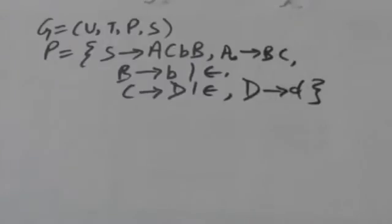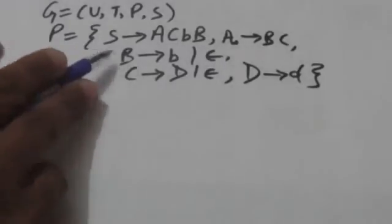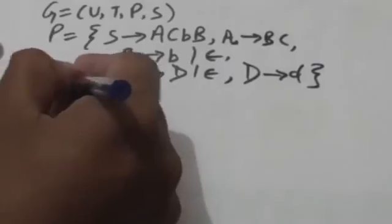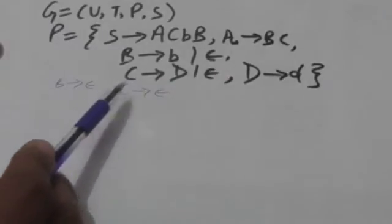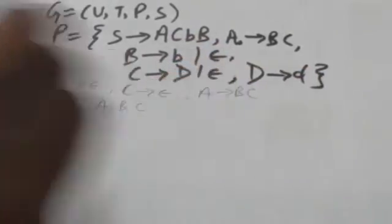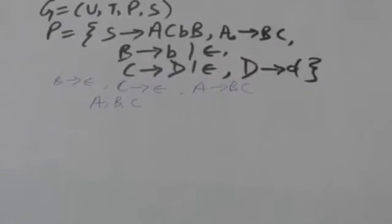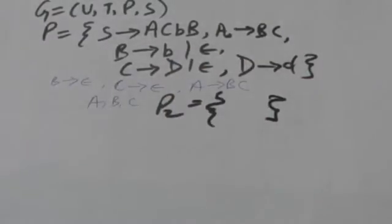We have to eliminate empty productions from this grammar G. First, we will find the nullable variables. In this grammar, the productions B → empty string and C → empty string directly make B and C nullable. Since A → BC and both B and C are nullable, A is also nullable. So A, B, and C are nullable variables.